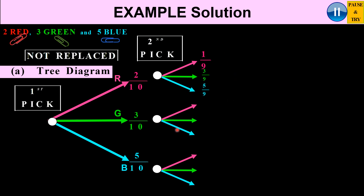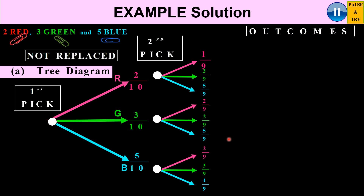If green was picked first, I now have 9 paper clips left. I haven't taken a red so it's 2 over 9. I've taken a green so instead of three greens I now only have 2, giving 2 over 9. I haven't taken a blue so that's 5 over 9. For the blue branch: I haven't taken a red, so 2 over 9; I haven't taken a green, so 3 over 9; but I've taken a blue so I have only 4 blues, giving 4 over 9. The sum of probabilities on each branch is 1.